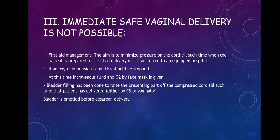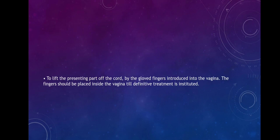If immediate safe vaginal delivery is not possible, the first aid management aims to minimize pressure on the cord until the patient is prepared for assisted delivery or transferred to an equipped hospital. If an oxytocin infusion is on, it should be stopped. IV fluids and oxygen by face mask should be given. Bladder filling has been done to raise the presenting part off the compressed cord until delivery is completed, either by caesarean section or vaginally. The bladder is usually emptied before caesarean delivery. To lift the presenting part off the cord, the gloved fingers should be introduced into the vagina and kept inside until definitive treatment is instituted.